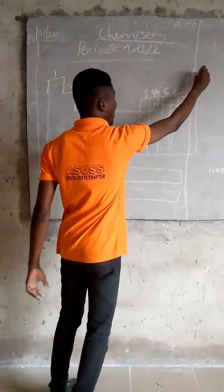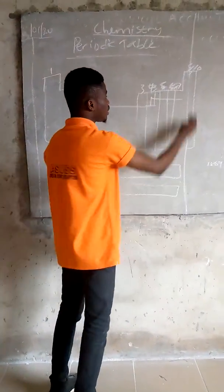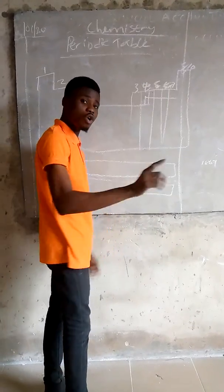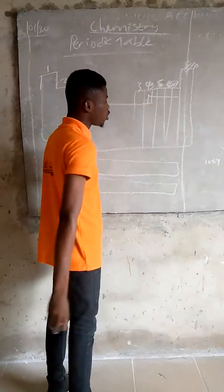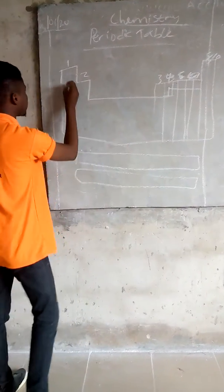It's called Group A because it has complete electrons in the outermost shell. And it's called Group Zero because it has no bonding electrons. It has zero bonding electrons, so it doesn't bond with any other element in the periodic table.